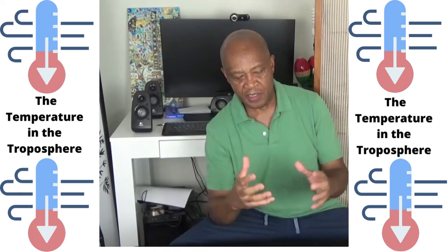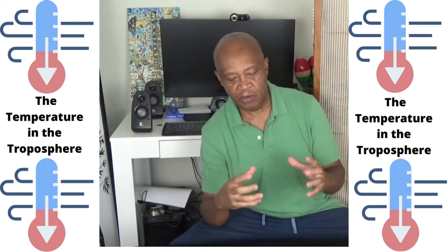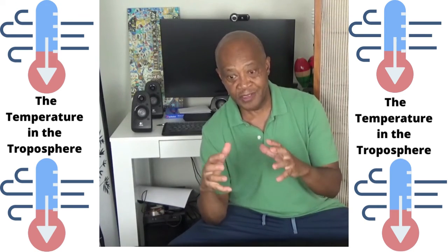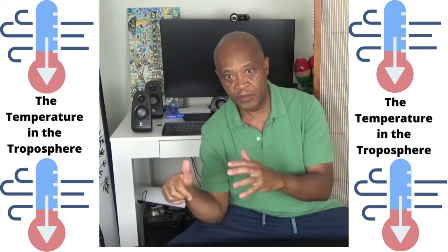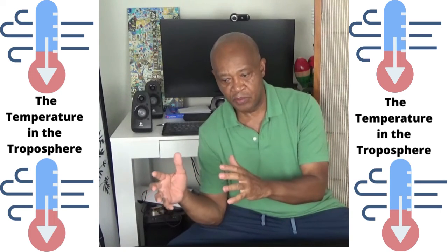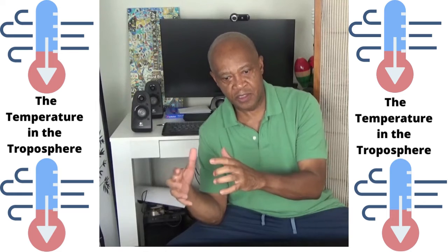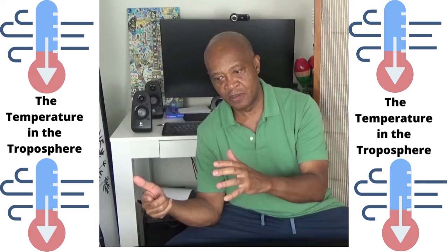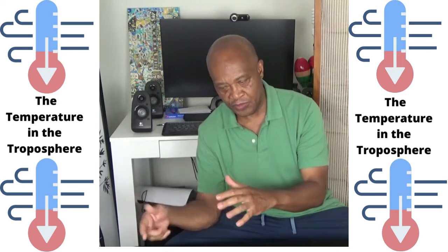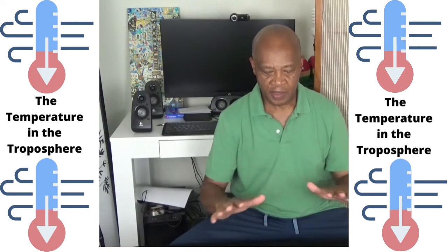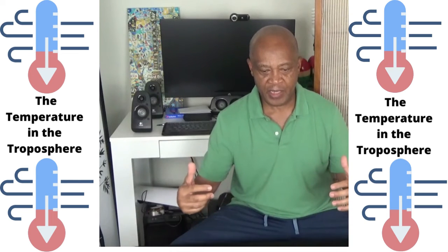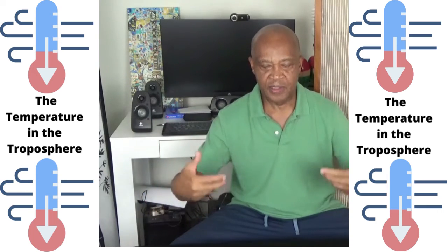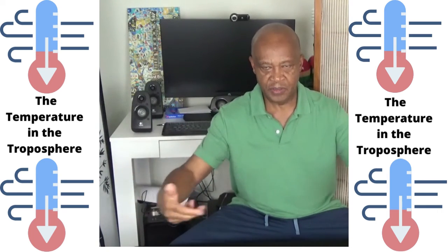It does that by a rate of 6.5 degrees C per one kilometer, or 3.6 degrees C per one thousand feet. The higher the altitude, the lesser the temperature.